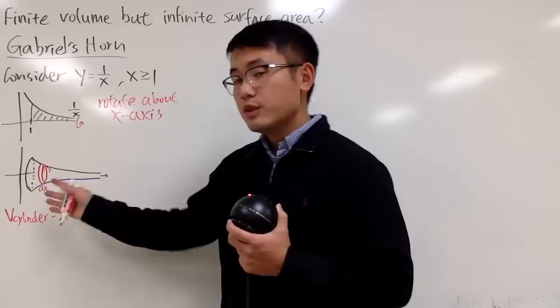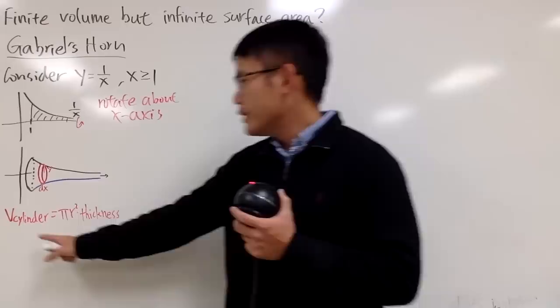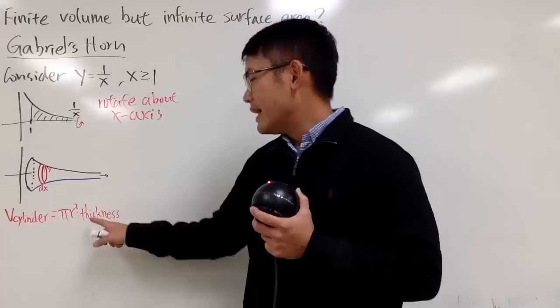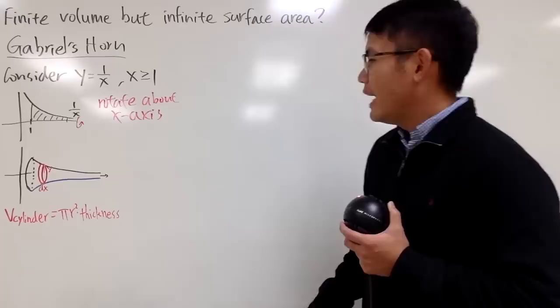Let's talk about the volume first. To get the volume, we can use the disk method. We cut this vertically, and each little disk is like a small cylinder. Let me remind you, the volume of a cylinder is π r² times thickness. I said thickness instead of height because the height is so small. Anyway, let me write down the volume for you.